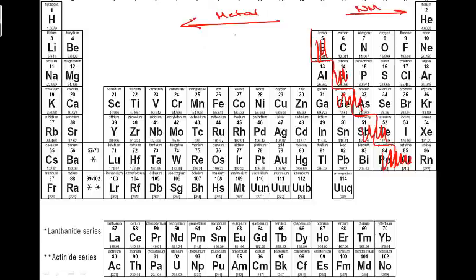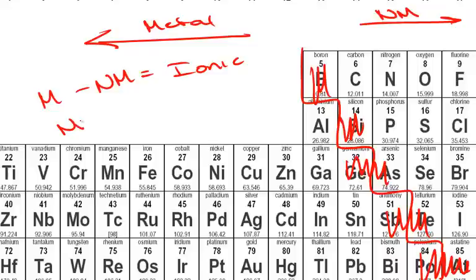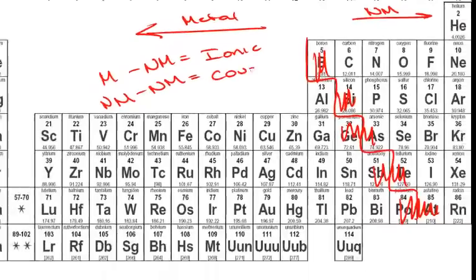If we have a metal bonded with a nonmetal, this is an ionic compound. If we have a nonmetal bonded with a nonmetal, that's our covalent bond.